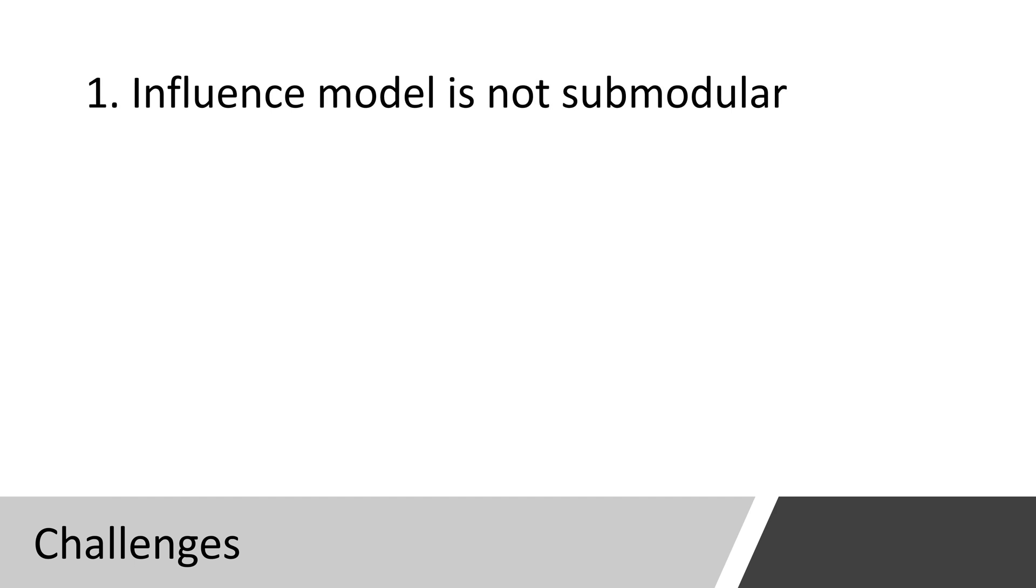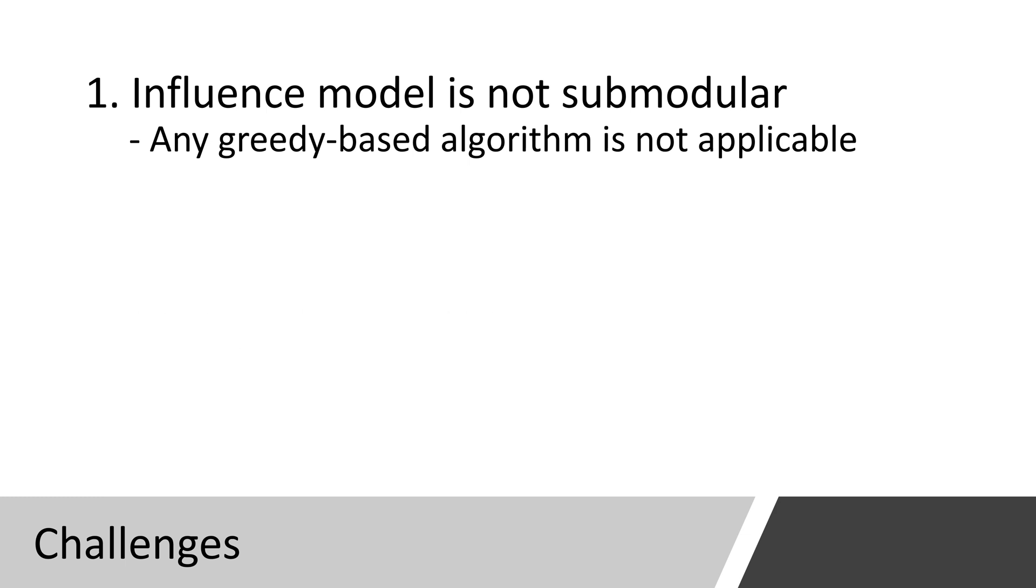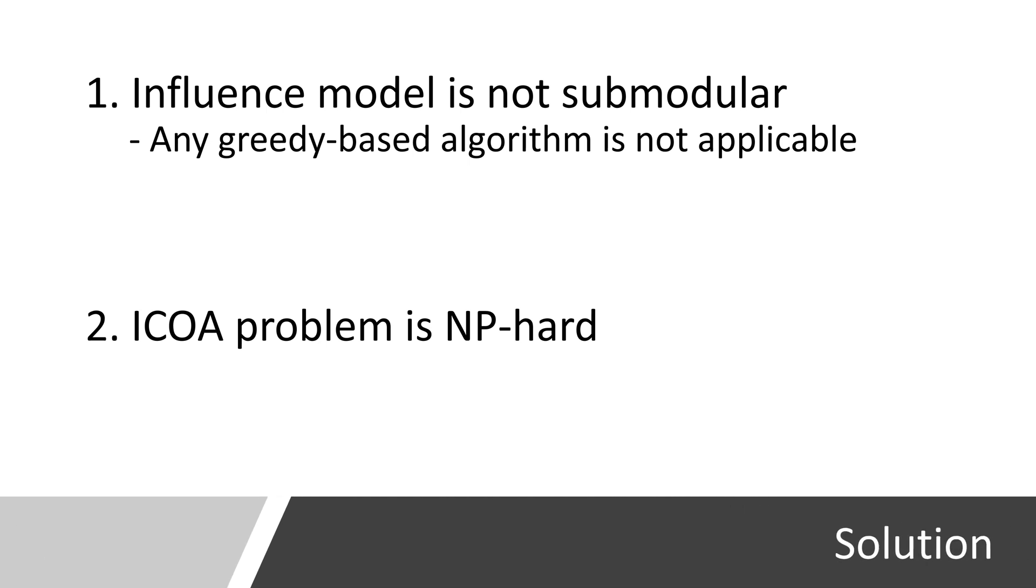But the logistic function leads to two challenges. First, the influence model is not submodular, which means that any greedy-based algorithm is not applicable. Second, our problem is NP-hard. To conquer these challenges, we introduce the upper bound estimation and branch and bound framework.